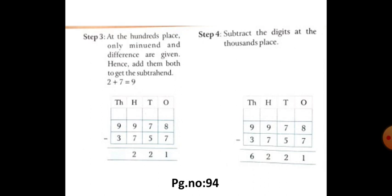Next, subtract the digits at the thousandth place. So 9 minus 3 is 6. So 9 minus 3 is 6. So finally, we get the answer 6221.